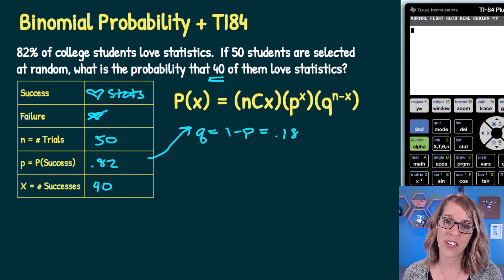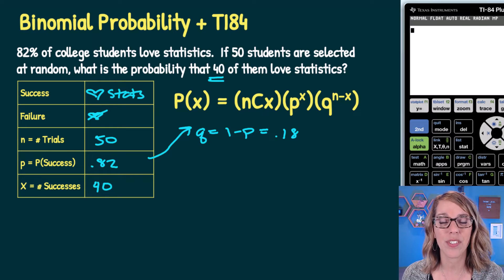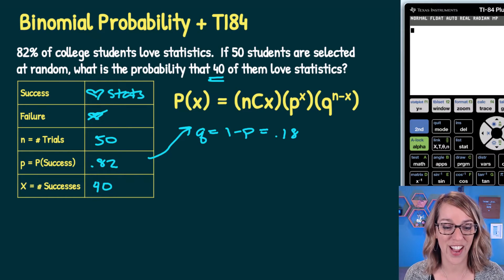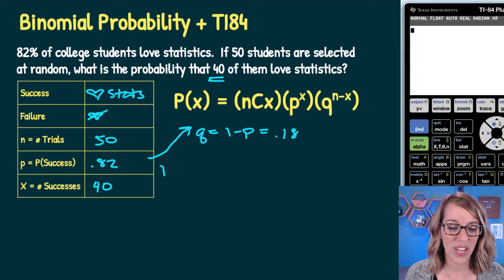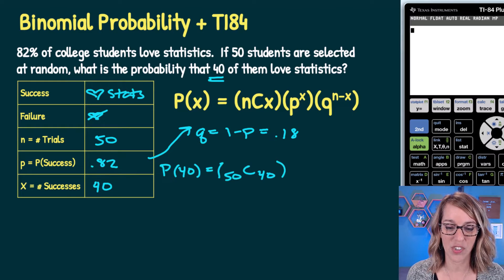Now I'm going to put this together in the formula first, but then we're going to use the binomial probability function in the calculator. So in our formula, P(X=40) equals 50 choose 40,